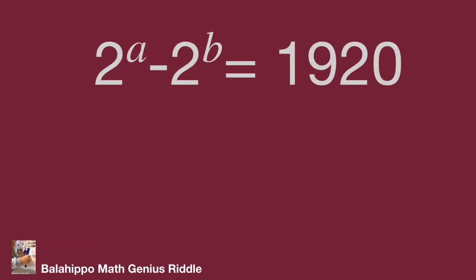The given equation is 2 power a minus 2 power b equals 1920, and a, b are integers. It gives us the first information: 2 power a is larger than 2 power b, which is larger than 0. So we can derive that a is larger than b and larger than 0.